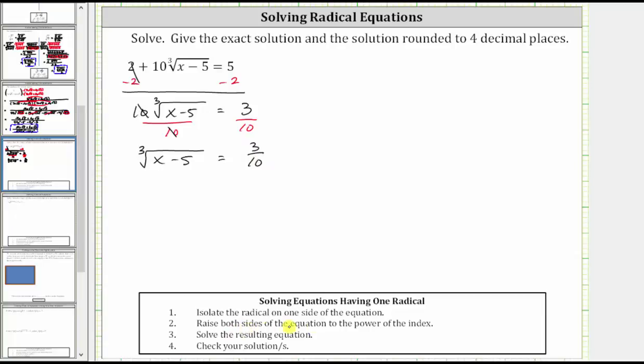The next step is to raise both sides of the equation to the power of the index, which will undo the radical. So because we have the cube root of the quantity x minus five, we now cube both sides of the equation or raise both sides to the third power.